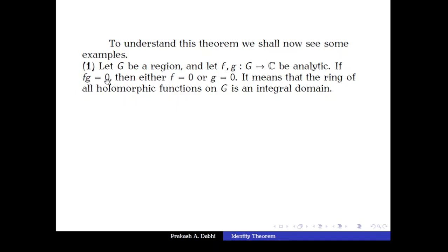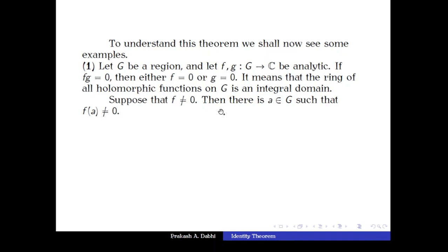To be an integral domain, we only need to prove: if a·b = 0 then either a = 0 or b = 0. That is precisely what we want to show here. We are given f·g = 0, and we must show either f = 0 or g = 0. We assume f is not identically zero and show that g must be zero.